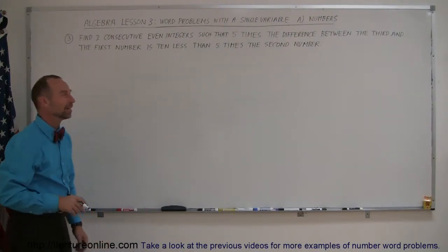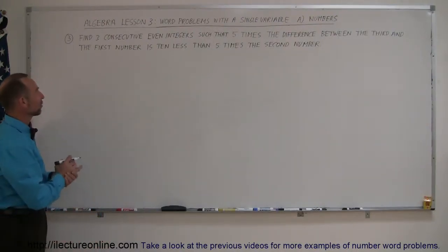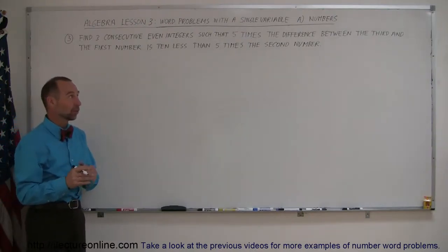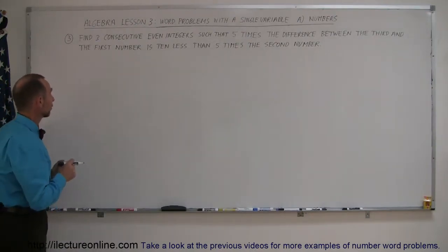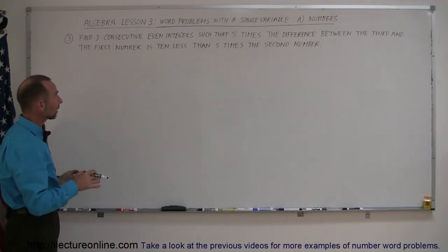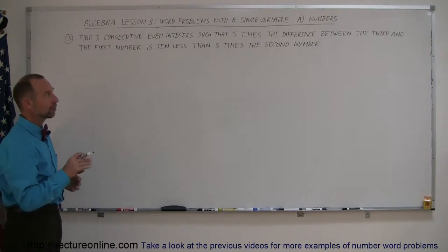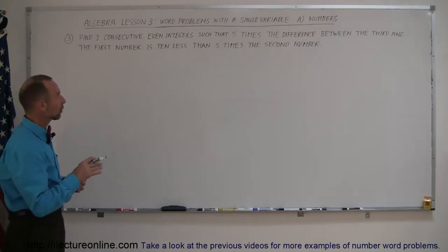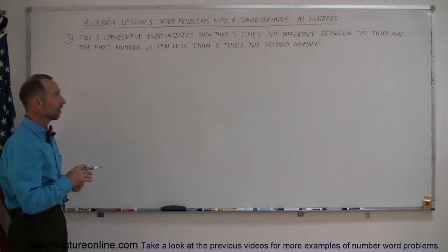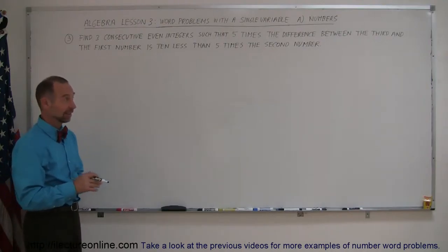Welcome to segment 3 of Lesson 3 in Algebra. We're dealing with word problems with a single variable, and we're still tackling numbers. This is our third example. It says here to find three consecutive even integers such that five times the difference between the third and the first number is ten less than five times the second number.